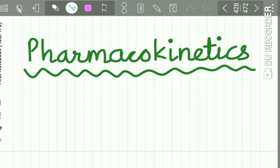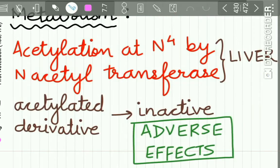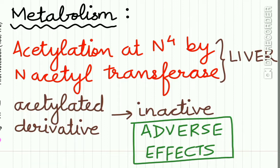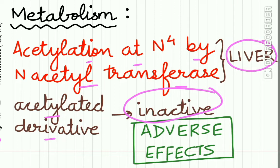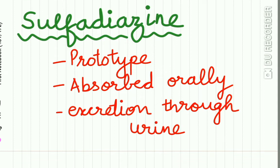Regarding pharmacokinetics: absorption of sulfonamides occurs in the GIT. Plasma protein binding is 10 to 95 percent, making the drug longer acting. The drug is widely distributed in the body — it enters the CSF and also crosses the placenta. Metabolism of sulfonamide occurs by acetylation at N4 by N-acetyltransferase enzyme, mostly occurring in the liver. The acetylated derivative of sulfonamide is inactive and causes adverse effects on the body.